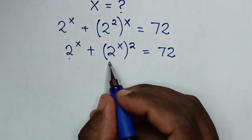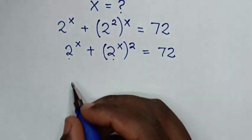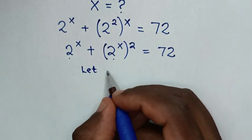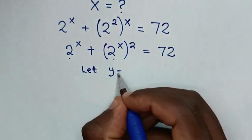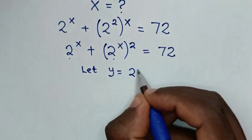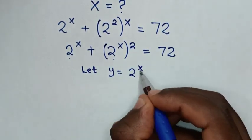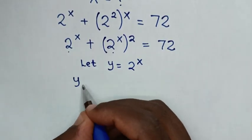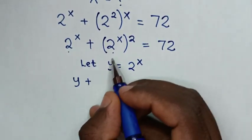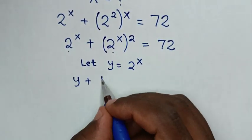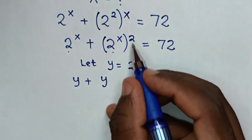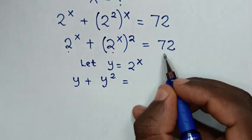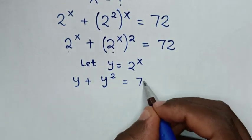Then because 2 power x is common, we let y equal to 2 power x. Then our equation will be y plus y squared is equal to 72.